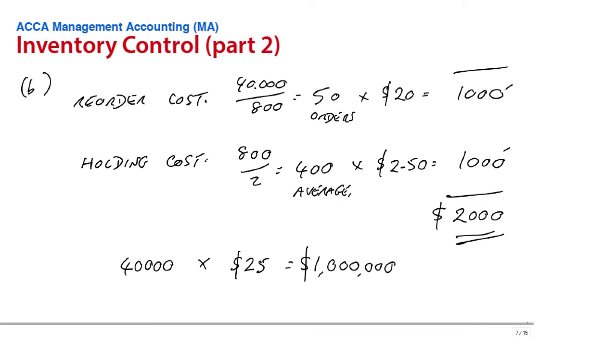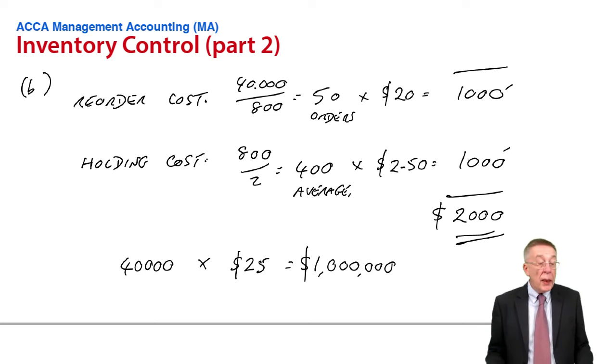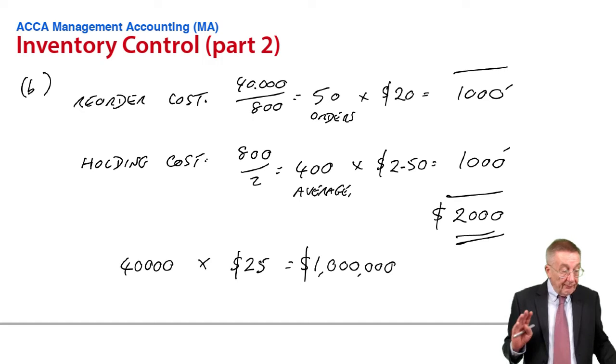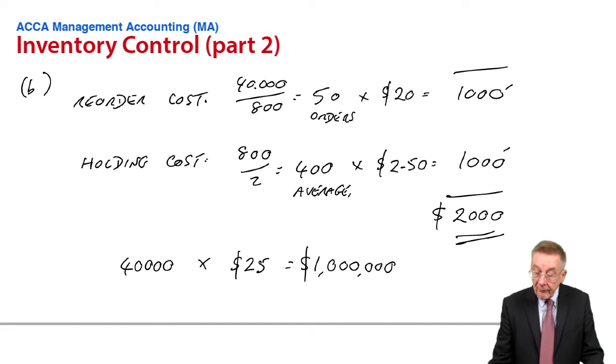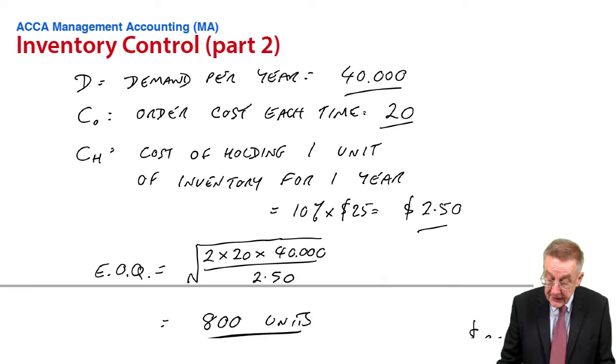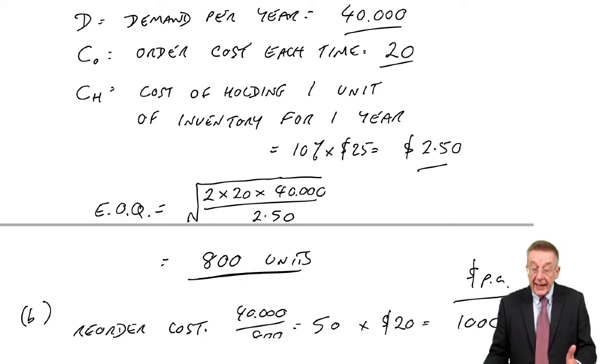Okay, this is the second of several lectures on Chapter 6, where we're looking at inventory control. And in the first lecture, we looked at the economic order quantity, which was simply sticking figures in the formula that's given you in the exam.